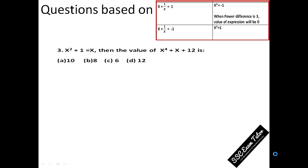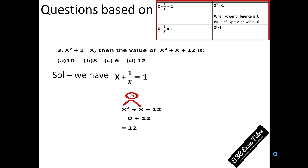Now let's move to the next question. It's again a similar question where we need to find the value of X to the power 4 plus X plus 12, and it starts with X squared plus 1 is equal to X, which is the same form — meaning X plus 1 by X is equal to 1. Now there is a twist: you can't directly put X to the power 4. So compare the powers — that is 4 and 1 — and subtract them. If you get 3 as your answer, simply put 0 in place of both. So the value of X to the power 4 plus X is equal to 0 because the difference of their powers is 3. At the end you will get 12 as your answer.